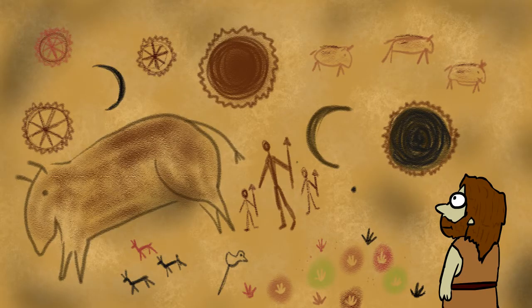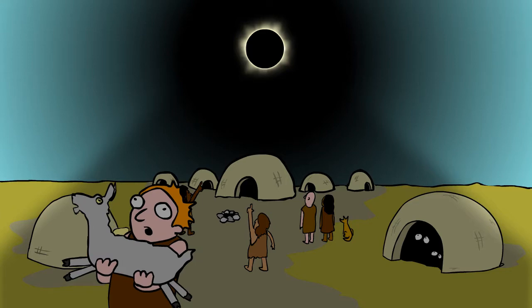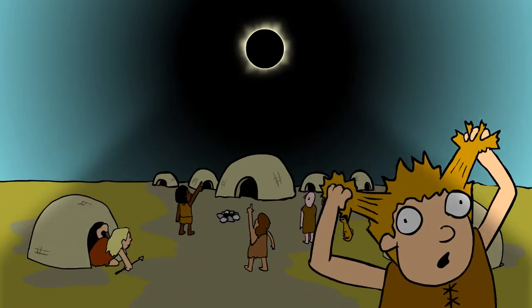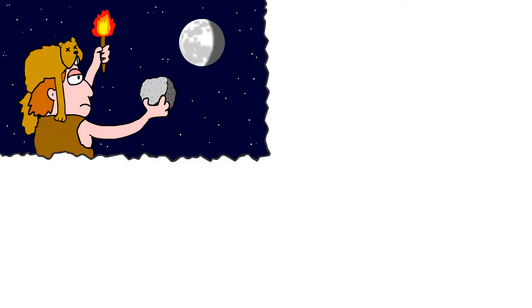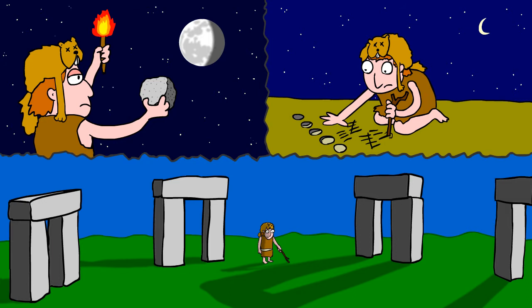Actually, humans have been curious about solar eclipses since before written history. While a lot of ancients may have freaked out seeing a solar eclipse, some of them started observing just what was going on. They were able to deduce what was happening, see a pattern, and in turn be able to predict when and where a solar eclipse would occur.